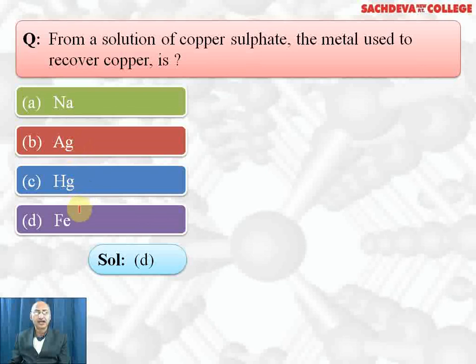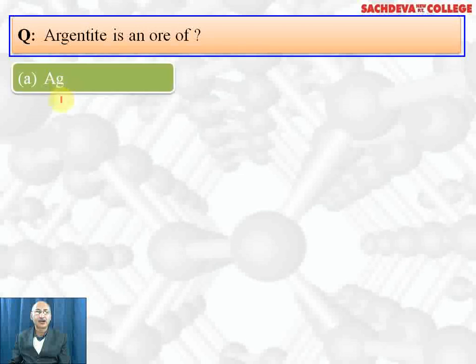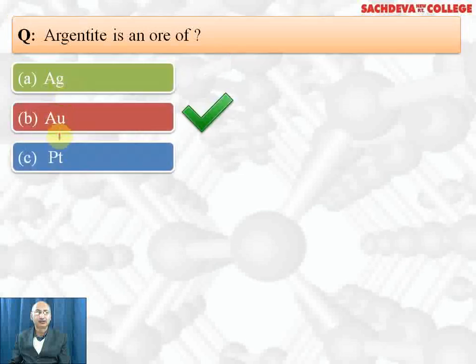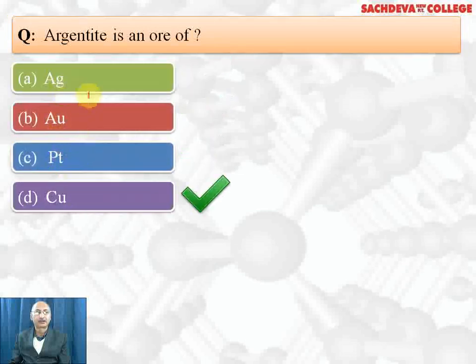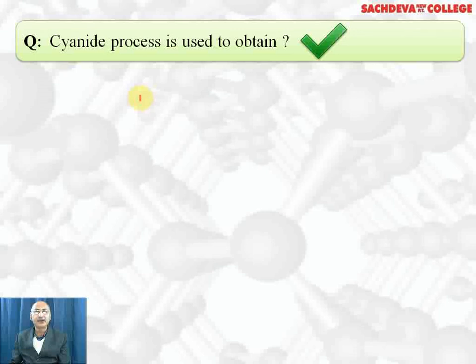Argentite is an ore of silver. Correct answer is silver, it is Ag2S which is called argentite. Cyanide process is used to obtain chromium, silver, copper, or zinc.